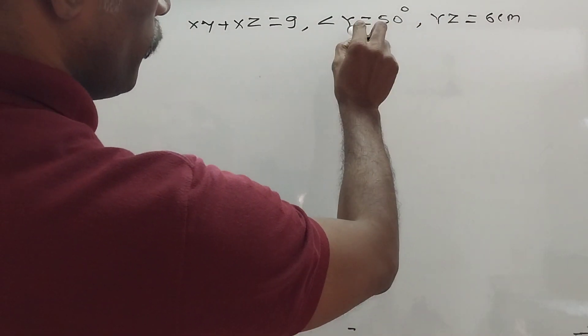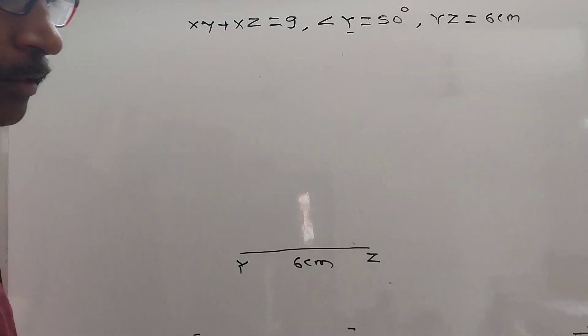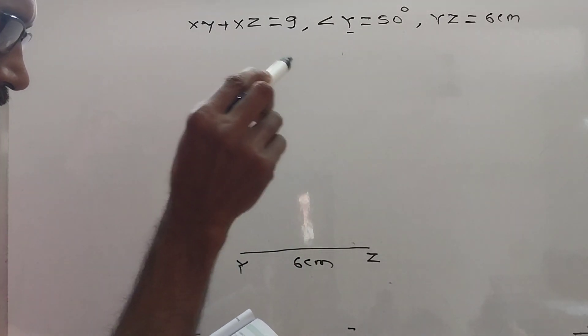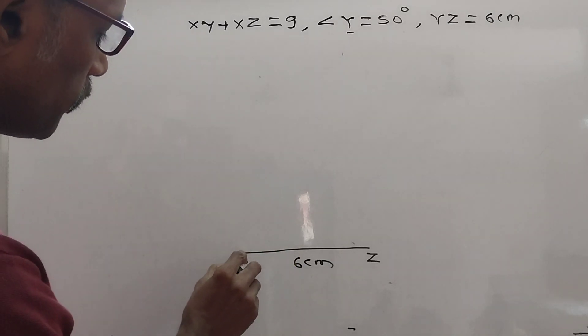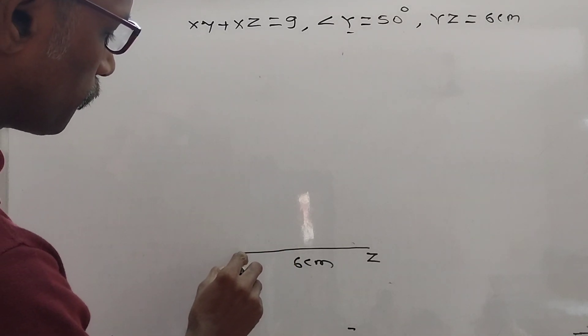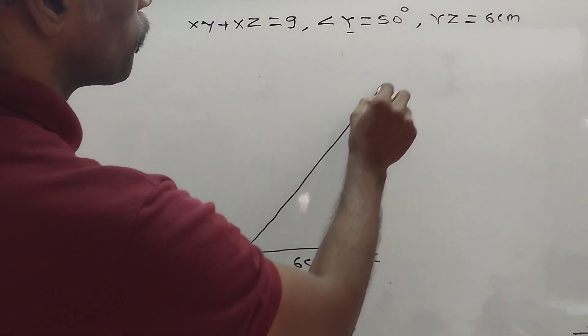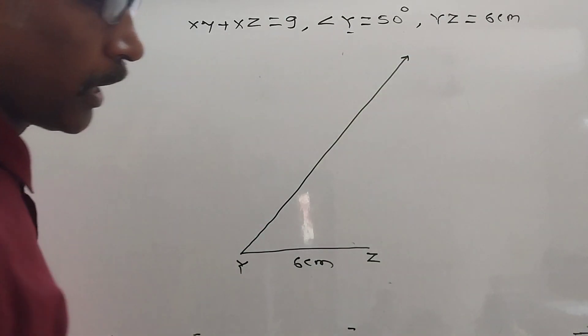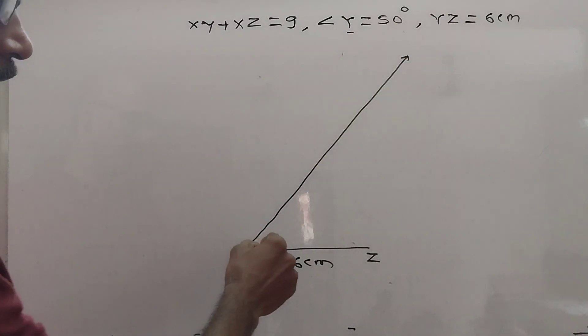Then we have given angle Y. Measure of angle Y, what is? 50 degrees. Okay. Then measure here 50 degrees with the help of protractor and draw a ray as long as possible. Did you understand?